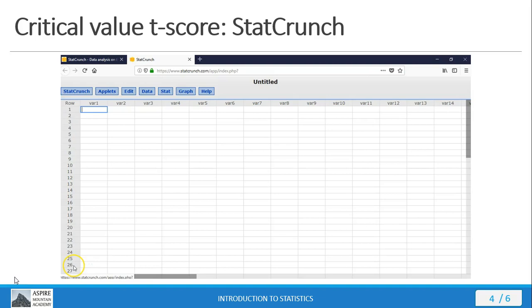We can also use StatCrunch to get our critical value t-score. This is way easier than using the t-table. Let me show you how this is done.